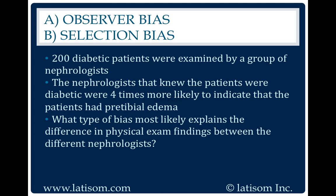Observer Bias. Observer Bias is a type of bias in which the researcher's cognitive bias causes them to unconsciously influence the outcomes of an experiment.